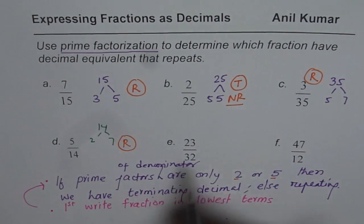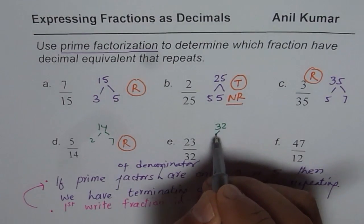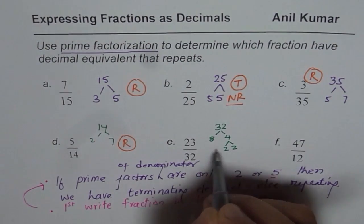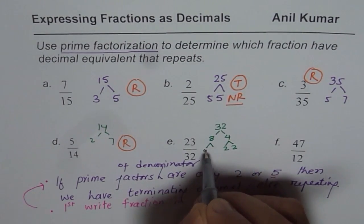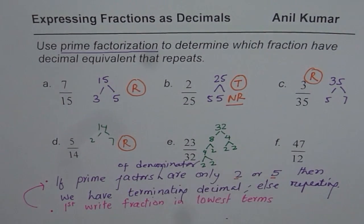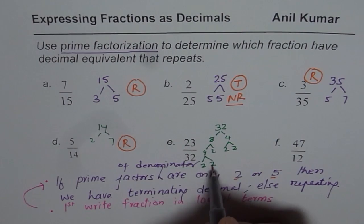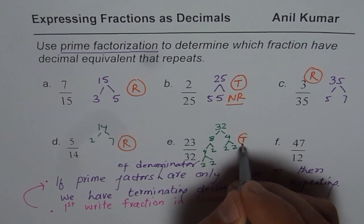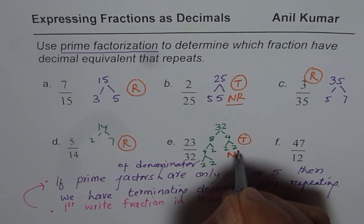Next we have 23 over 32. 32 could be written as 8 times 4. 4 is 2 times 2, 8 is 4 times 2, and 4 could be written as 2 times 2. So here we have only 2's as factors of 32, therefore this is terminating or not repeating.